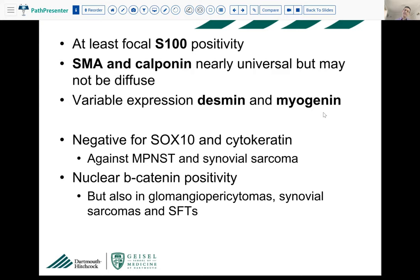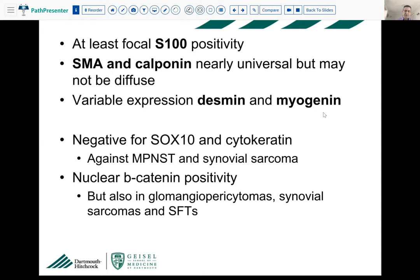S100 positivity is almost universal, at least focal. You will also see SMA and calponin, which may be focal or multifocal. There is variable expression for desmin and myogenin. Some cases are completely negative for desmin. Importantly, it is negative for SOX10 — a more sensitive and specific marker for neural crest differentiation — and negative for cytokeratin. To argue against MPNST, you would expect some SOX10 positivity, though MPNSTs can be SOX10 negative. Beta-catenin is positive but is not very specific and I don't find it helpful.